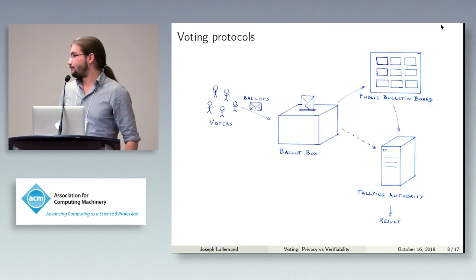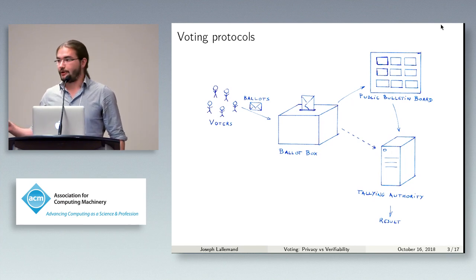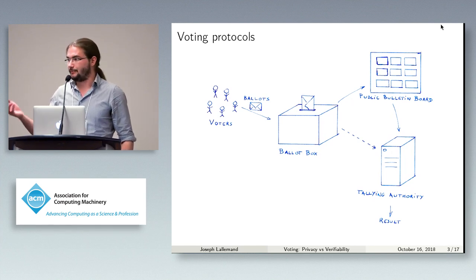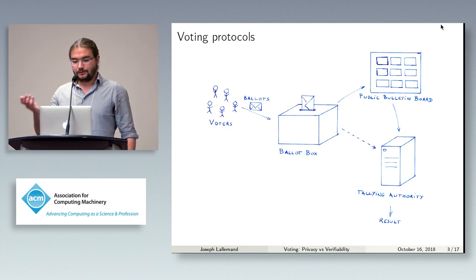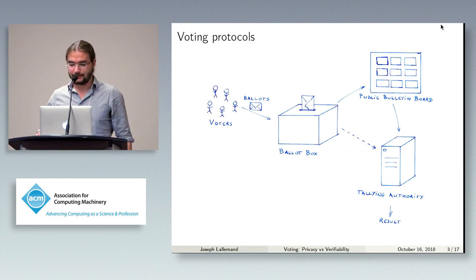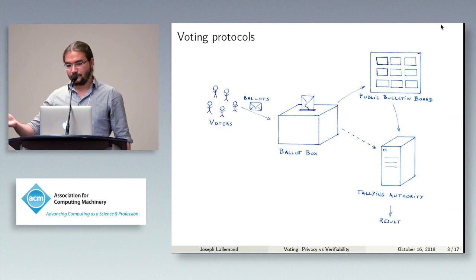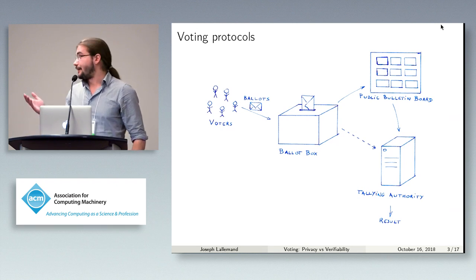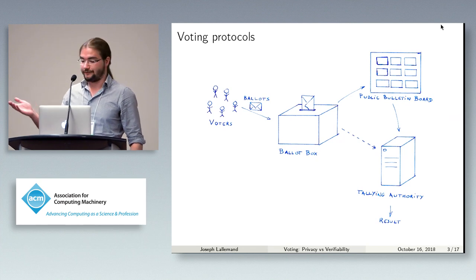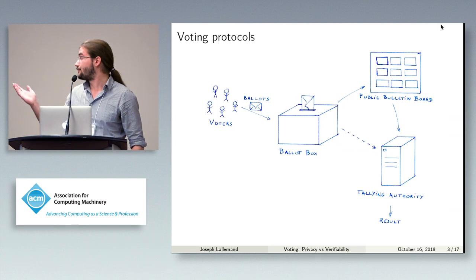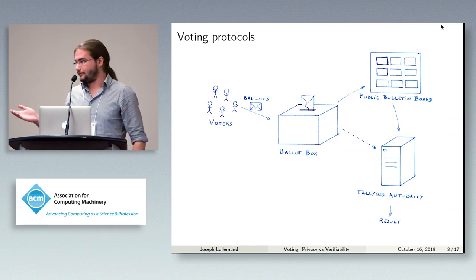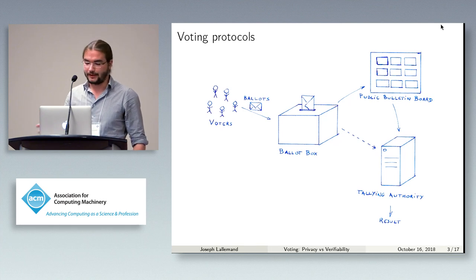Let's have a look at what a voting protocol typically looks like. On the left, we have voters who are willing to take part in the election. They send their votes inside of ballots to the ballot box. The ballot box collects all the ballots and then publishes them on the public bulletin board that everyone can see. The tallying authority is in charge of computing all the results by counting the votes from the public bulletin board. Alternatively, the ballot box could directly transmit the ballots to the tallying authority without using a public bulletin board.